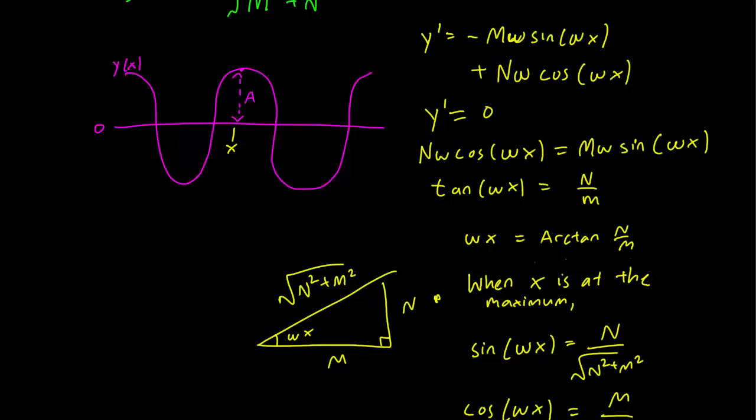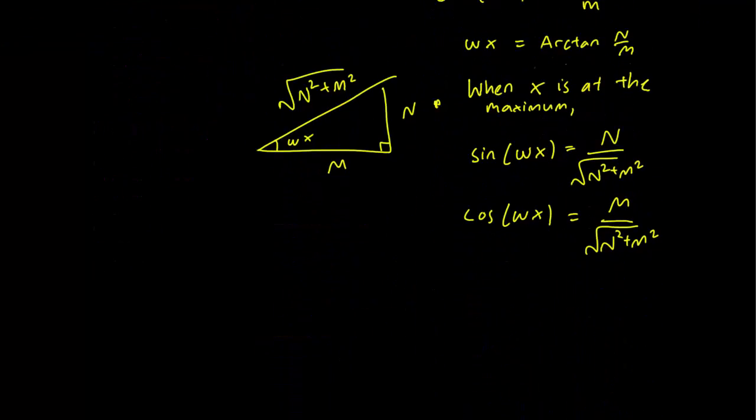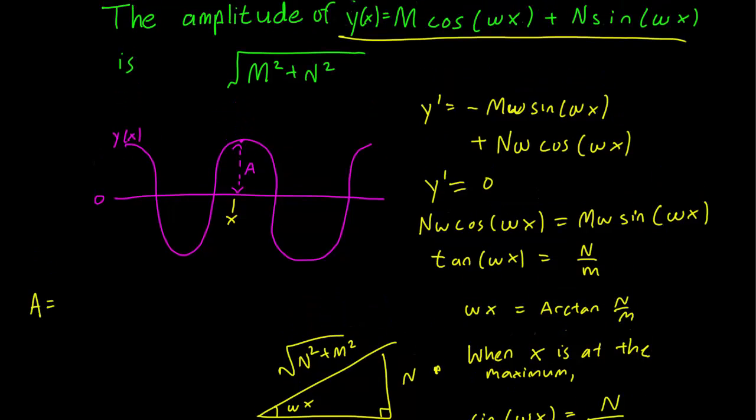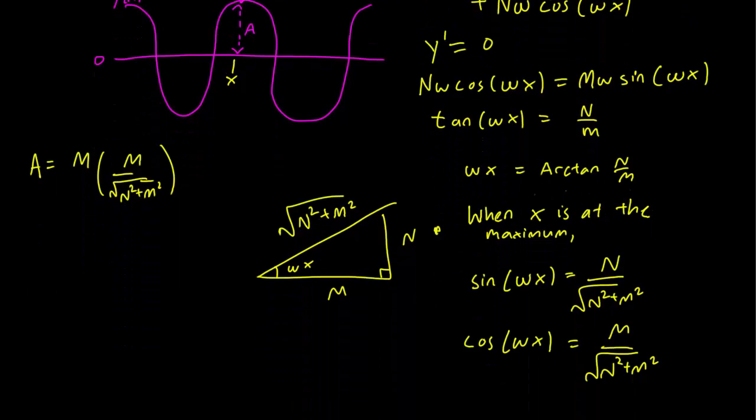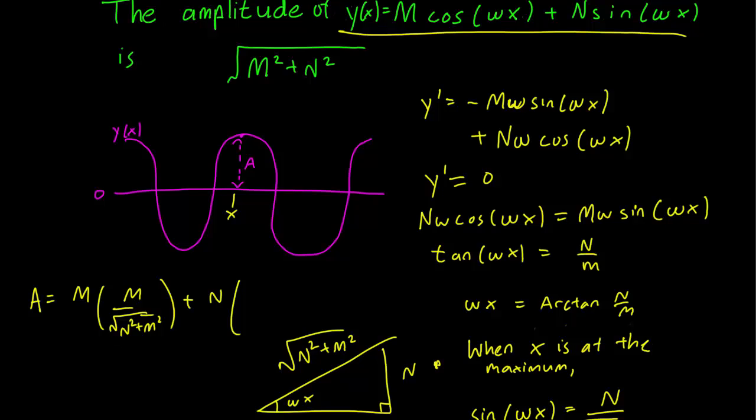So at this maximum point, we can plug into our original equation. The amplitude is going to be M times M over √(N² + M²), because that's what we calculated cosine to be, plus N times N over √(N² + M²).